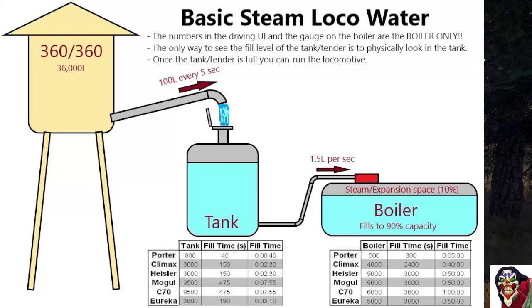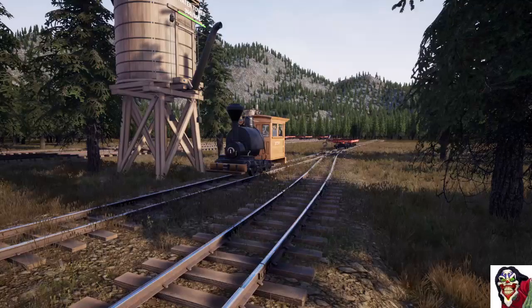The pump runs at 1.5 liters per second. For example, with the Porter it only takes 40 seconds to fill the tank, but then it takes a further five minutes for that water to get pumped from the tank into the boiler. We'll have a look at that on the actual locomotive.